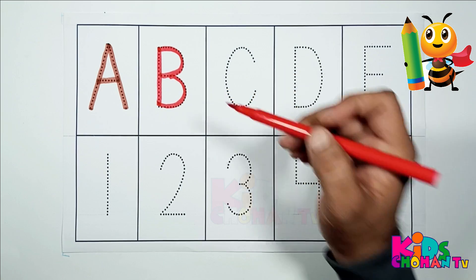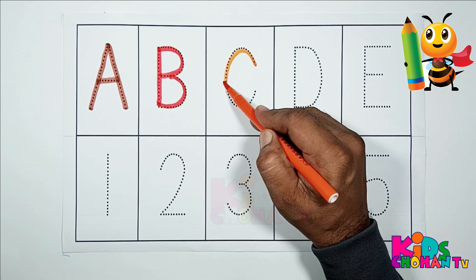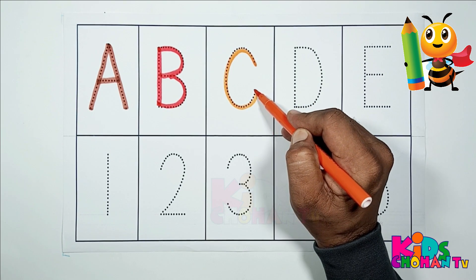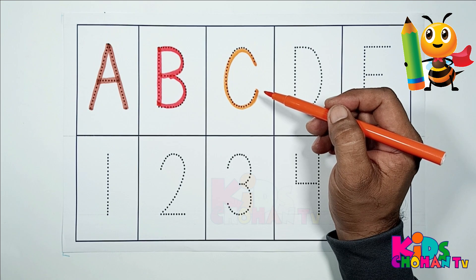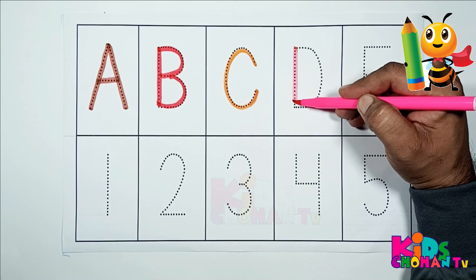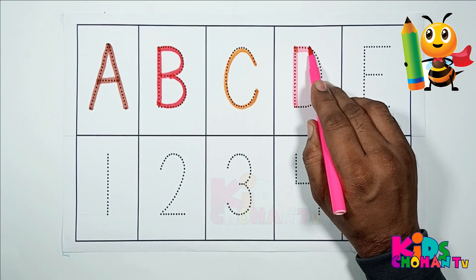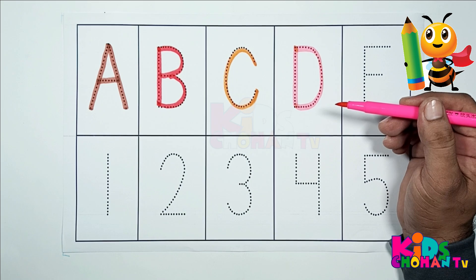Now kids, we are tracing letter C. This is letter C. C for cat. Now kids, we are tracing letter D. D for doll.